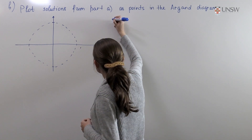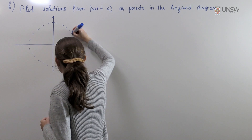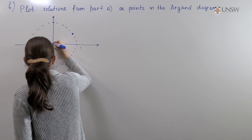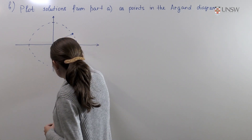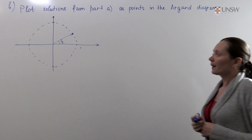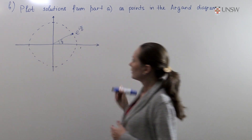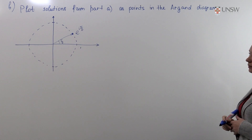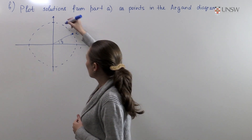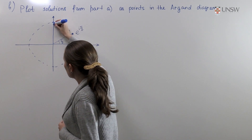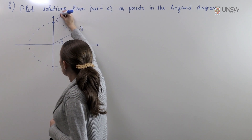The first solution was e to the power i times π/6. It will be the point where the angle between this vector and the x-axis is π/6. So this point here will be e to the power i times π/6. Our next point is e to the power i times π/2. The angle of π/2 is here, so this point will be e to the power i times π/2.